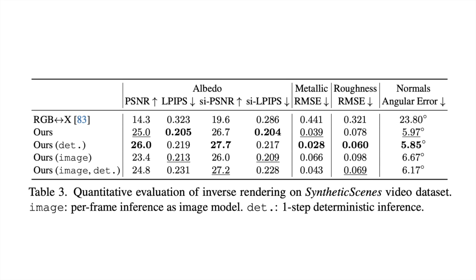Quantitative evaluations on the synthetic objects and synthetic scenes datasets demonstrate that Diffusion Renderer outperforms prior baselines in both rendering quality and inverse estimation. For example, it achieves a PSNR of 28.3 on synthetic objects and 26.0 on synthetic scenes, surpassing DyeLightNet and RGBX.